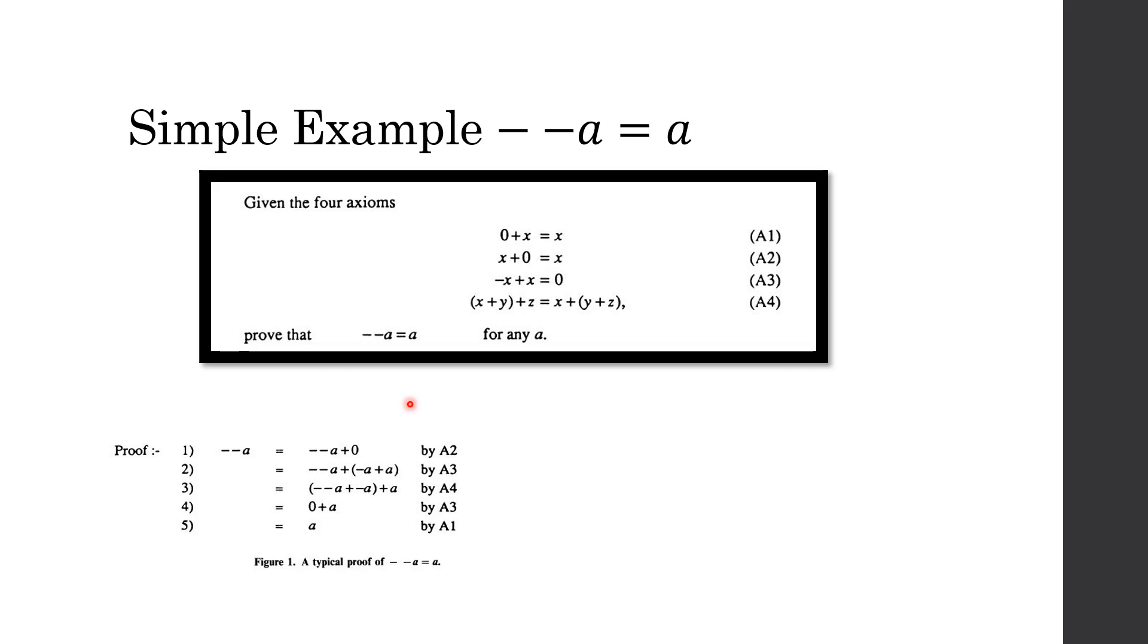We always start from the axiom, then we try to prove whatever we have. So for this case, we have the group additive axiom A1 to A4. Then we want to prove this.